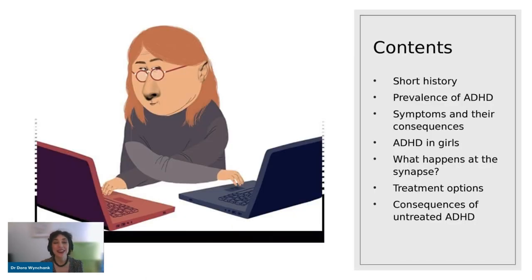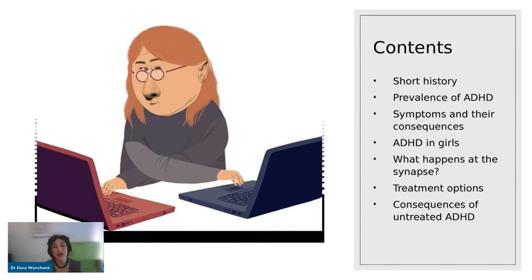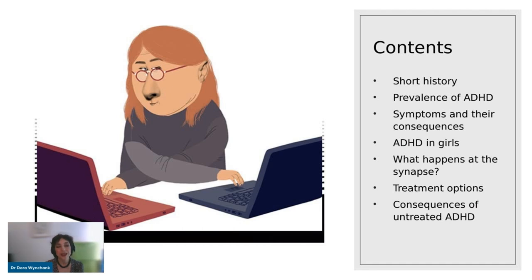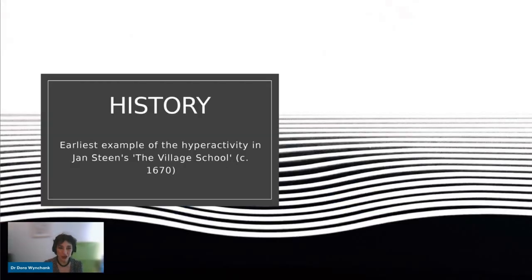What we're going to do today is: I'm going to give you a short history of ADHD in children, talk about prevalence, the symptoms and consequences. I can't resist slipping in a slide on ADHD in girls, because ADHD in girls is something that is often neglected and the symptoms present quite differently. I'll give you some neurochemical information on what happens at the synapse, talk about treatment options, and what happens when ADHD is not treated in children.